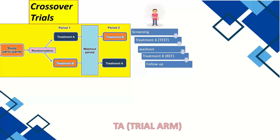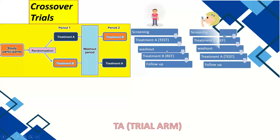The washout duration — such as 16 or 20 days — is based on the half-life of the drug. After the washout, the next drug is given. If it is a two-period study, two drugs are given; if it is a three-period study, there is another washout followed by the third period. The second subject follows the same design but in reverse: screening, then Drug B, then washout, then Drug A.